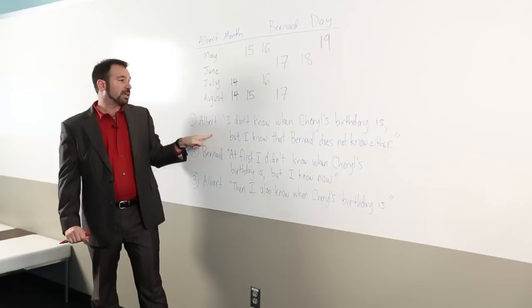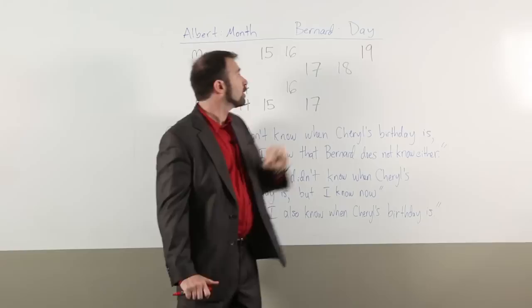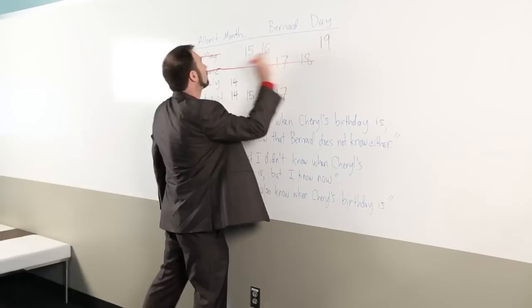Why is that? Well, because Albert is sure that Bernard doesn't know, and if Albert was told the month of May, he couldn't be sure that Bernard wasn't thinking of the number 19. Therefore, we can cross out May, and for similar reasons, it can't be the 18th, so we can cross out June.